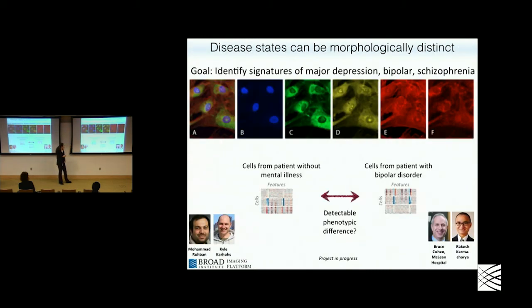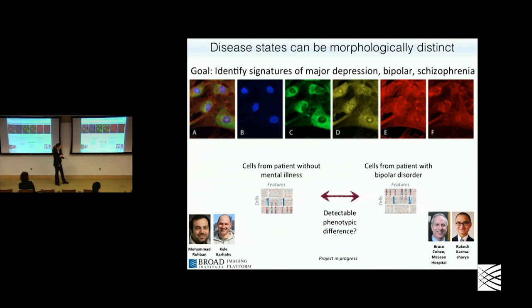In our own lab we're taking this approach with some mental illnesses, for which there are no molecular diagnoses — no blood test. What we're finding is that patient cell lines for these disorders are yielding particular phenotypes that are distinguishable. We're very excited to follow this up and potentially do drug screens on those kinds of cases.